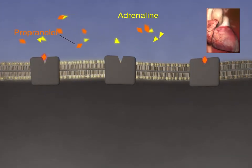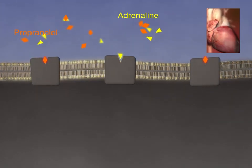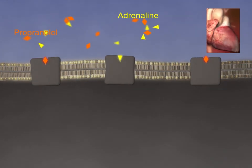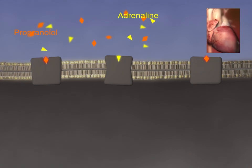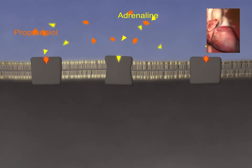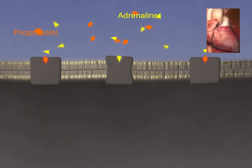When a beta-blocker is taken by a patient with hypertension, it will compete with the adrenaline released from the sympathetic nerves onto the heart, decreasing the number of beta-adrenergic receptors that can be stimulated.